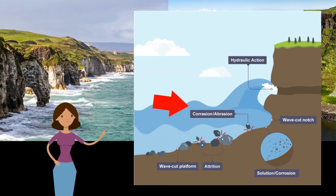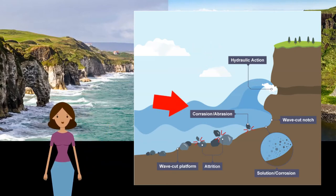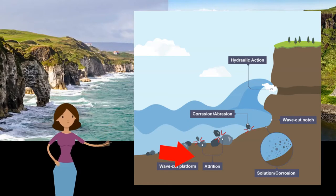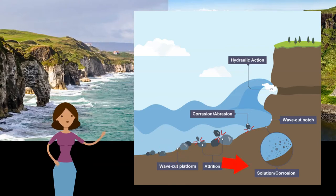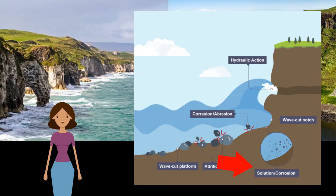Secondly, abrasion: bits of rock and sand in waves grind down cliff surfaces like sandpaper. Thirdly, attrition: waves smash rocks and pebbles on the shore into each other and they break and become smoother. Fourthly, solution: acids contained in seawater will dissolve some types of rocks, such as chalk or limestone.